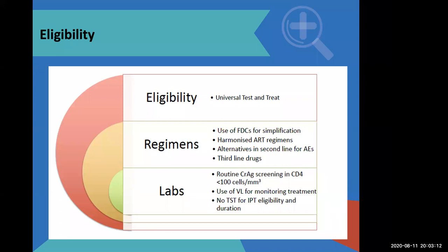Previously, eligibility criteria required waiting for the CD4 count to drop below 200, then it was improved to 350, then 500. In today's world, we do not look at a CD4 count to determine who is eligible for ARVs. We also do not use the clinical presentation.